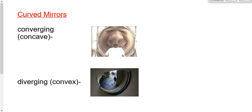We're going to spend some time drawing ray diagrams for both types of mirrors — convex and concave — and then do a little bit of math. The good news is the ray diagrams are not all that different from the ray diagrams for lenses, and the mathematics are exactly the same as they were for lenses.